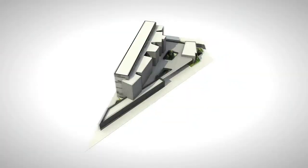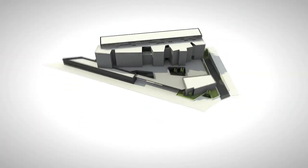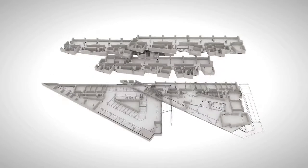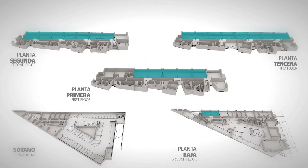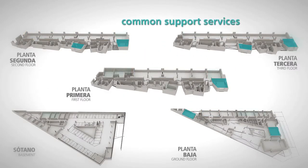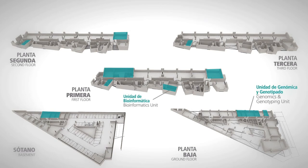It has an area of 6,400 square meters spread over four floors and a basement. GENIO has 22 laboratories as well as workrooms and common support units such as genomics and genotyping, bioinformatics, microscopy, cytometry and cell cultivation amongst others.